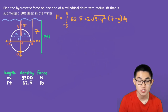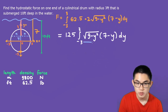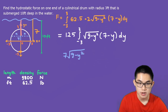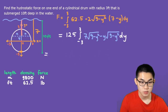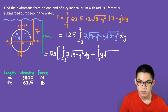Multiplying the constant 62.5 by 2 gives 125, which we take outside the integral. So we get 125 times the integral from −3 to 3 of √(9 − y²) · (7 − y) dy. We expand this as 7√(9 − y²) minus y√(9 − y²), splitting it into two separate integrals: 125 times [the integral from −3 to 3 of 7√(9 − y²) dy minus the integral from −3 to 3 of y√(9 − y²) dy]. This makes each part easier to solve individually.